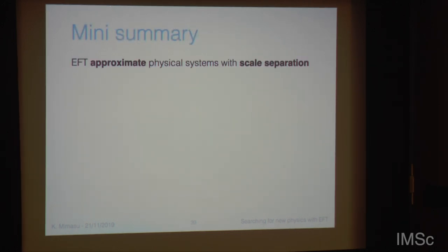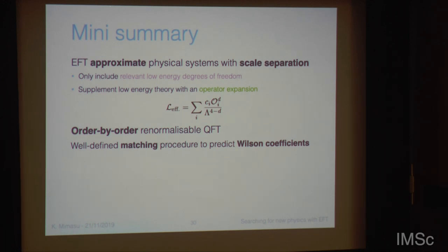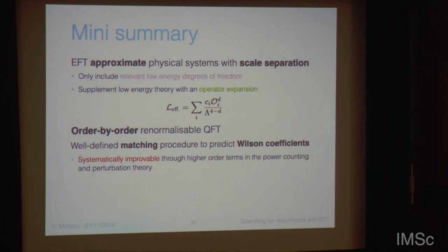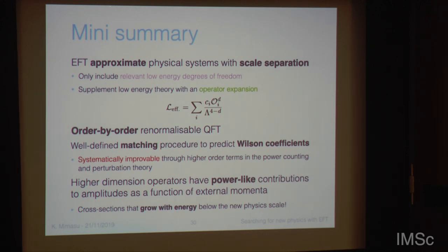You can solve the RG equations to find the evolution of the different couplings. If you wanted to probe this theory at an energy below M, you would solve these equations and run the coefficients down to your experimental energy. EFTs approximate physical systems with scale separation by only including relevant low-energy degrees of freedom, supplementing the theory with an operator expansion. This is order-by-order renormalizable QFT, with a well-defined matching procedure that is systematically improvable. Higher-dimensional operators give power-like contributions to amplitudes as a function of external momentum, meaning cross-sections grow with energy below the new physics scale — a nice feature to exploit when searching for EFT effects.